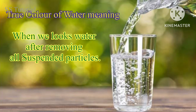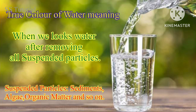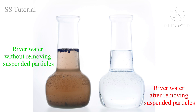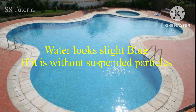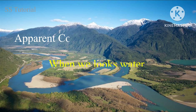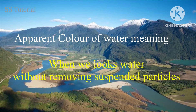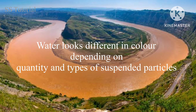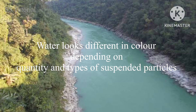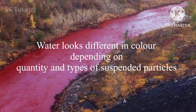True color of water refers to how water looks after removing all suspended particles, such as algae, sediments, minerals, and so on. If we remove suspended particles from river water, it will look colorless in small quantities, but in large quantities it would be slightly blue due to reflection of sunlight. Apparent color of water means how water looks without removing suspended particles — river water then appears different in color depending on the quantities and types of suspended particles.